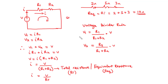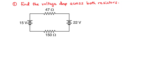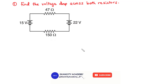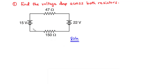Let's solve our first example: find the voltage dropped across both resistors. In this circuit, we have two resistors — 47 ohms and 150 ohms — and two voltage sources — 15 volts and 22 volts. We are asked to find the voltage drop across both resistors. The two resistors are connected in series because the same current flows through each of them.